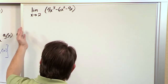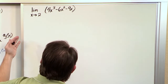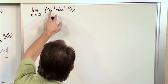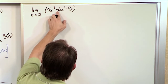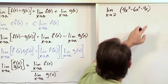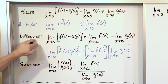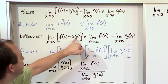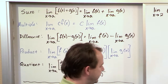Well, I've already told you how to do this — just plug it in. But really what's happening is you have this term, which is a function, this is a function, and this is a function, and they're all subtracted. So basically you're going to use the difference rule here, which says that I can take the limit of each individual thing and then subtract them.